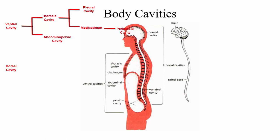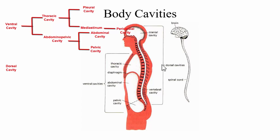The abdominal pelvic cavity divides into the abdominal cavity and the pelvic cavity. The abdominal cavity contains digestive organs — liver, intestines, stomach. The pelvic cavity contains some intestine, reproductive organs such as the uterus, and the urinary bladder. The dorsal cavity divides into the cranial cavity, where the brain lives, and the vertebral cavity, where the spinal cord lives.